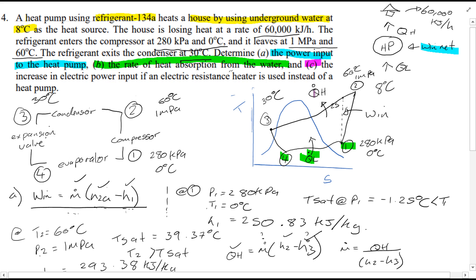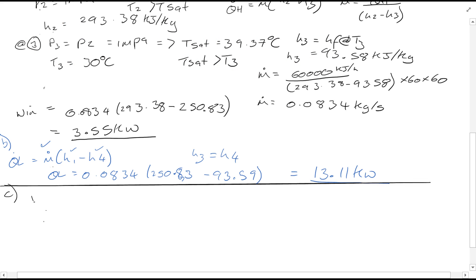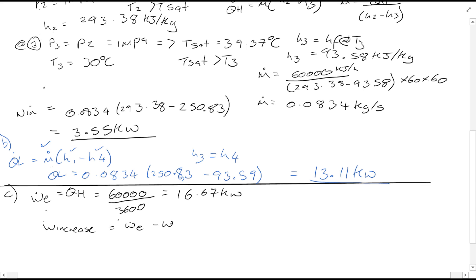For part C, we find the increase in electric power input if an electric resistance heater is used instead of the heat pump. For an electric heater, W equals QH, which equals 60,000 kJ/hr divided by 3600, giving 16.67 kilowatts. The increase in power required compared to the heat pump is 16.67 minus 3.55, which equals 13.12 kilowatts.